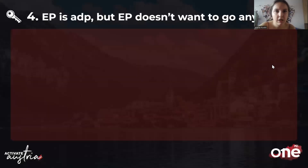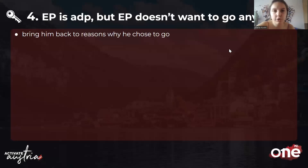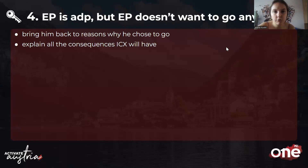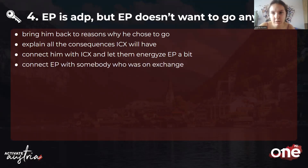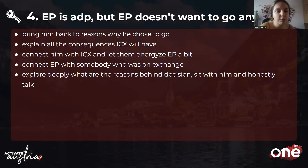Objection number four: EP is approved but suddenly doesn't want to go on exchange. First, bring them back to the reasons why they chose to go and why they got approved. Then explain the consequences for the ICX — they are counting on this person for six weeks of internship or volunteering. Connect EP with the ICX so the host can energize them by saying 'we are waiting for you.' Also connect them with someone who was already on exchange, and explore the deeper reasons behind their change of mind — sit with them and honestly ask why.